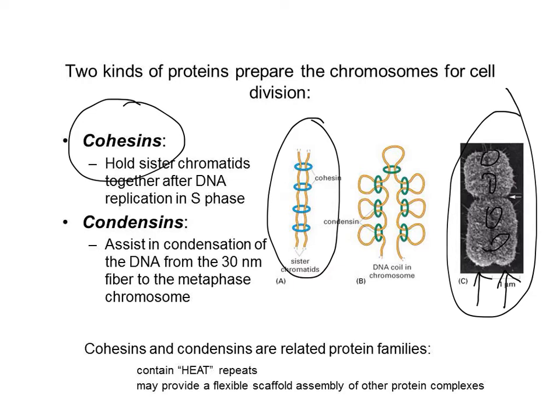In addition to cohesins that hold sister chromatids together, we also have important proteins called condensins. Condensins play an important role when the cell enters into mitosis — they help fold and pack DNA so that it can form this nice, tight mitotic chromosome structure needed during the division process. Cohesins and condensins appear to be from related protein families; they have some similar sequences but have divergent functions in regards to preparation for cell division.